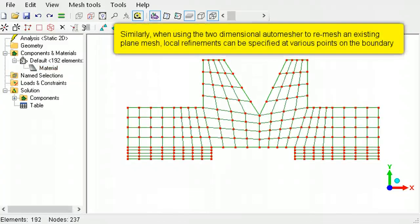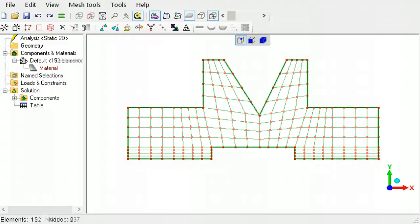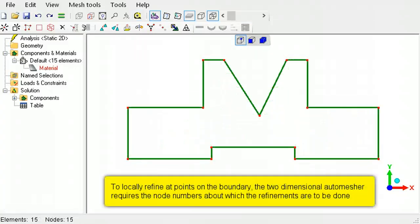If the mesh is of plain continuum elements, then local refinement can only be done at nodes on the outer boundary. In node selection mode, click the node around which the refinement is required and note down its node number.